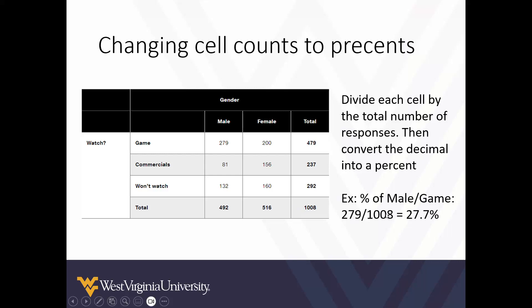Doing visually what was just described: if we look at a dataset where we had biological sex — male — and why they like to watch the Super Bowl for the game, the commercials, or they simply don't plan to watch, we can calculate the percent of those who are male and choosing to watch for the game. So 279 divided by 1008 gives us 0.277, or 27.7%.